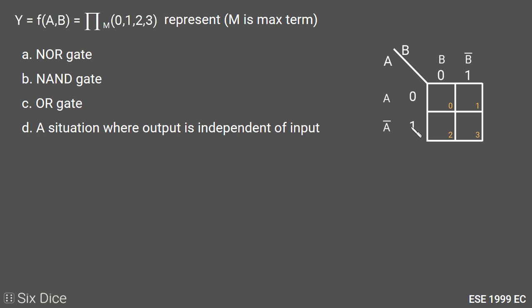So we have present max terms 0, 1, 2, and 3, so we put 0 at the zeroth cell, first cell, second cell, and third cell. So here all cells are covered with 0.